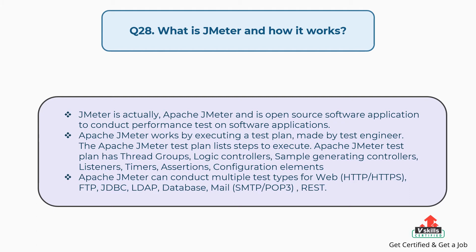Question 28: What is JMeter and how does it work? Apache JMeter is an open source software application for conducting performance tests. It works by executing a test plan made by the test engineer. The test plan includes thread groups, logic controllers, sample generating controllers, listeners, timers, assertions, and configuration elements. JMeter can conduct multiple test types: web (HTTP/HTTPS), FTP, JDBC, LDAP, database, mail (SMTP/POP3), and REST.